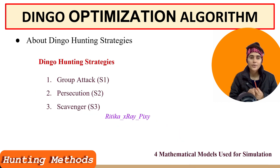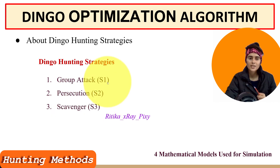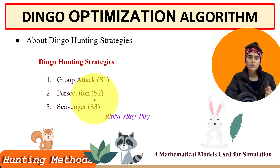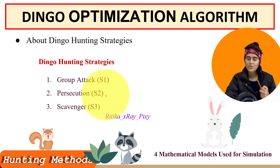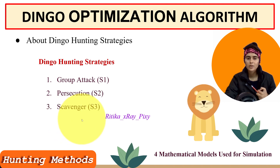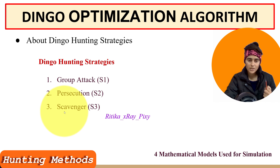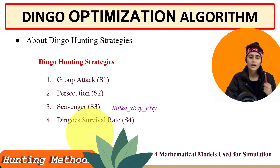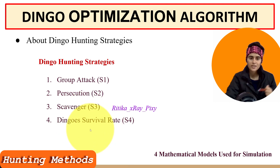There are different hunting strategies used by dingoes for survival. First is group attack — used for large animals like cattle and kangaroos. Second is persecution — dingoes kill small animals like rabbits using their excellent stamina, changing targets until caught individually. Third is scavenger — when not hunting, they randomly walk in the territory, finding dead animals or stealing food killed by other animals. Fourth accounts for dingo survival rate due to illegal hunting in Australia.